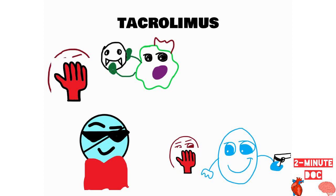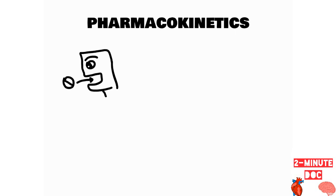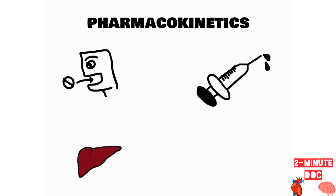By inhibiting the CD4 helper T cells, it prevents the activation of cytotoxic T lymphocytes. There is a molecule called calcineurin inside the CD4 helper T cells, and Tacrolimus is going to inhibit this calcineurin. So, you should remember that Tacrolimus is a calcineurin inhibitor. It can be taken orally or intravenously, and it is metabolized by the liver and excreted in bile.